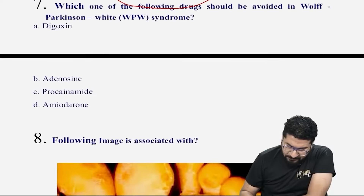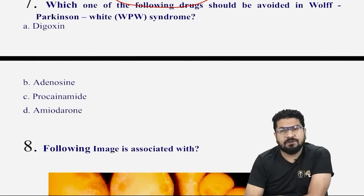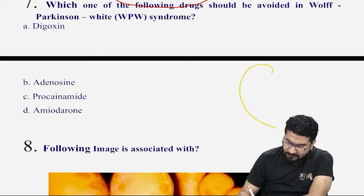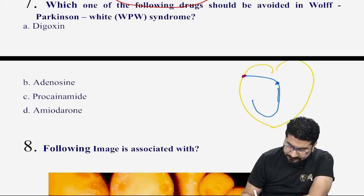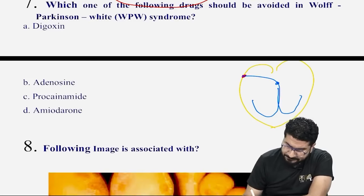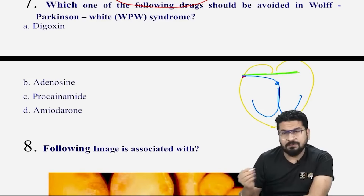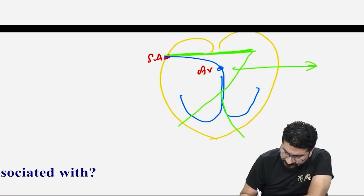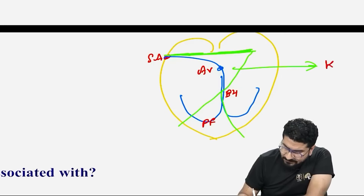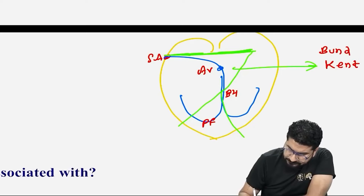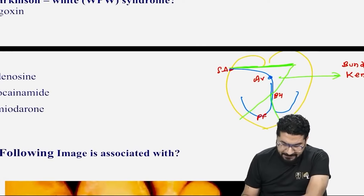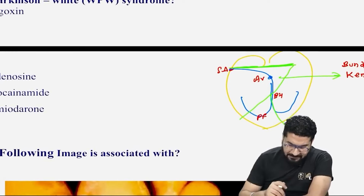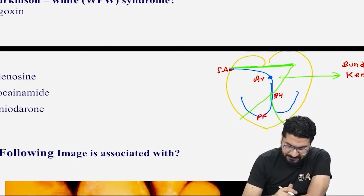Next: which drug is avoided in WPW syndrome — Wolf-Parkinson-White syndrome? In WPW, there is an aberrant conduction pathway. Normally, impulse travels from SA node to AV node to bundle of His to Purkinje fibers. But in WPW, impulse travels through an abnormal pathway called the bundle of Kent.